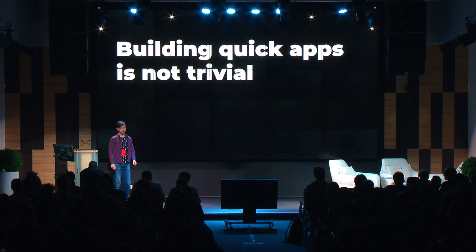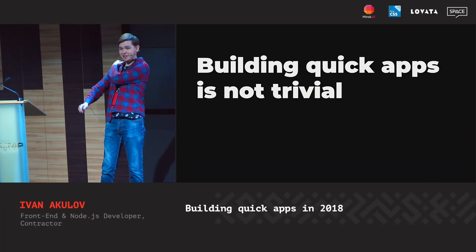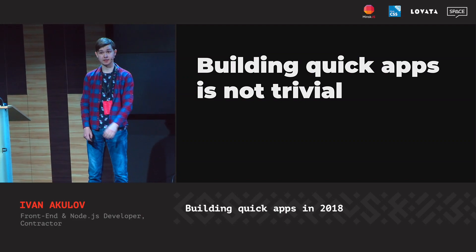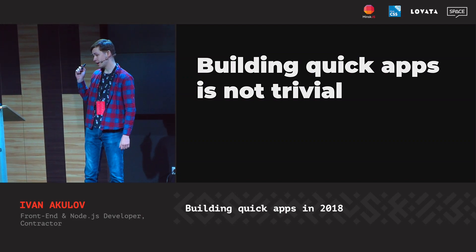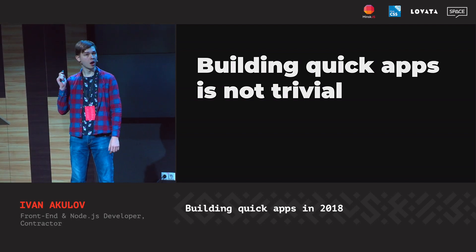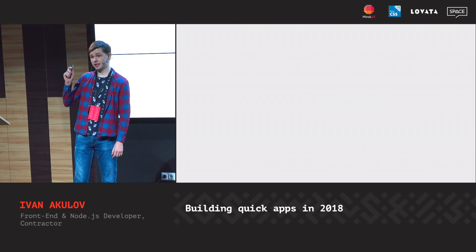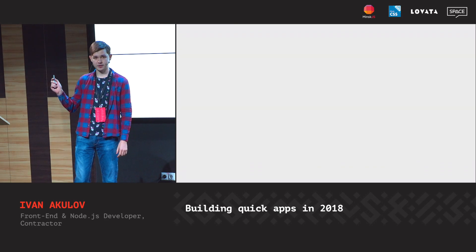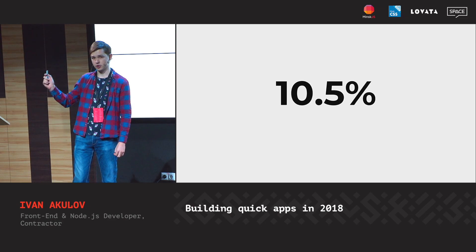Building quick apps is not trivial, but it's incredibly important for a product. Performance directly affects your product. Performance affects conversion and revenue. For example, AliExpress made their site faster by a third and started receiving 10.5% more orders.